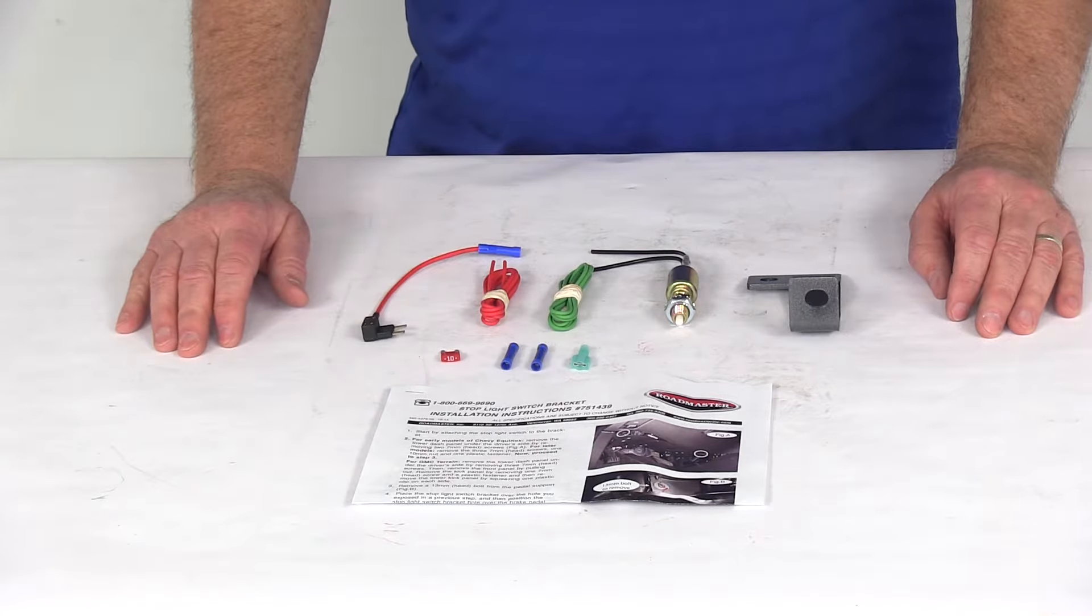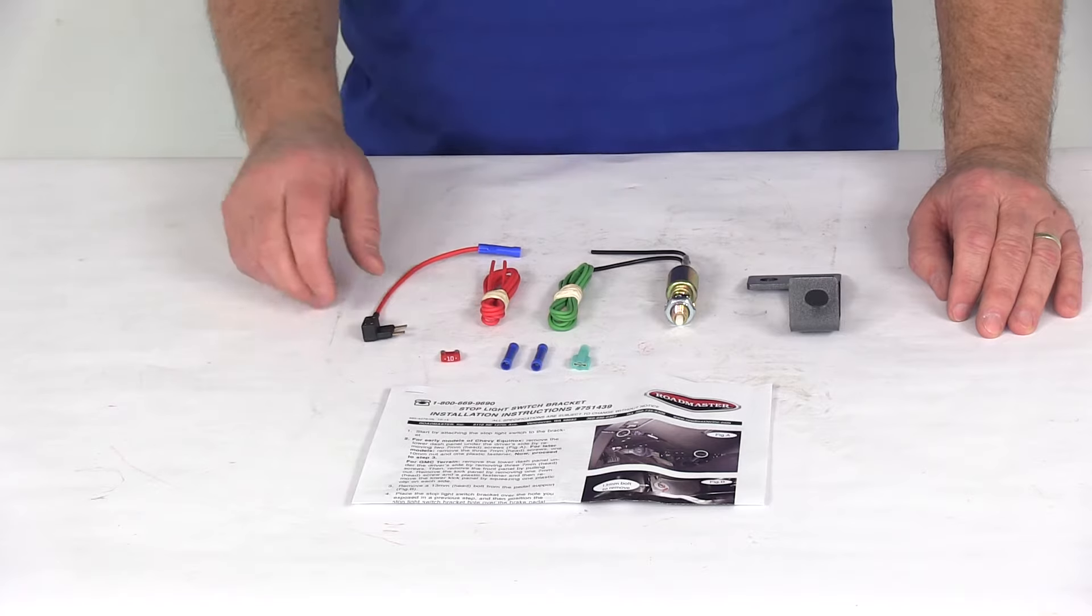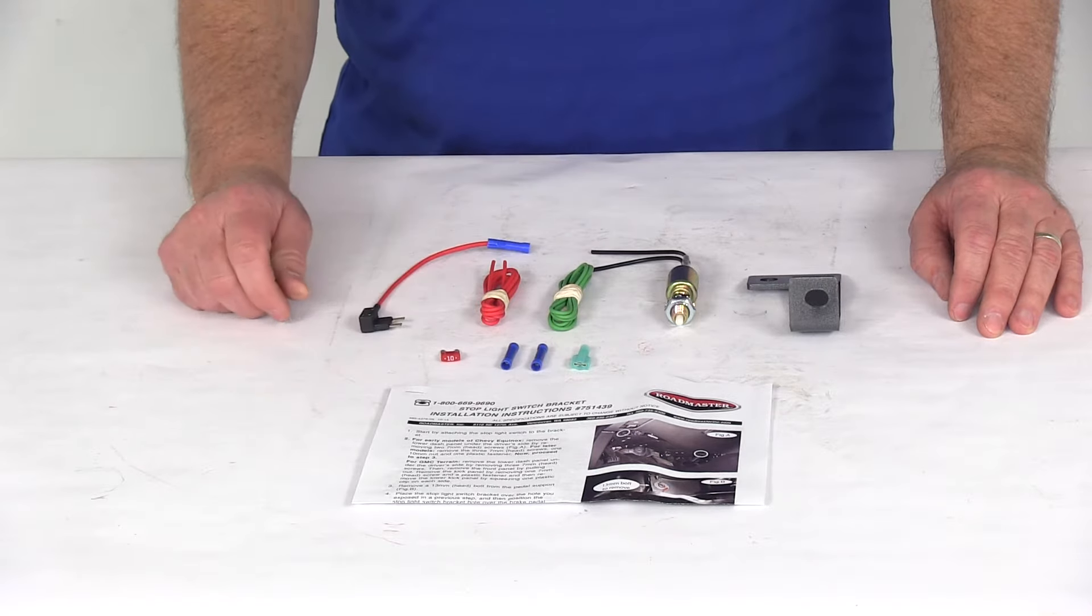This works great for any application that does not have a tow position in the ignition. This does wire directly into the towed car's fuse box for constant current.